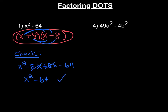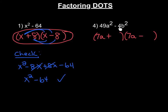Let's try number four. With number four we have a difference, and both terms are perfect squares. So let's set up our two sets of parentheses. The square root of 49 is 7, and the square root of a squared is a, so 7a is the square root of the whole first expression. We put 7a in the first spot in each parenthesis, make one addition and one subtraction, and since the square root of 4b squared is 2b, we put 2b in the second spot. And that's done.